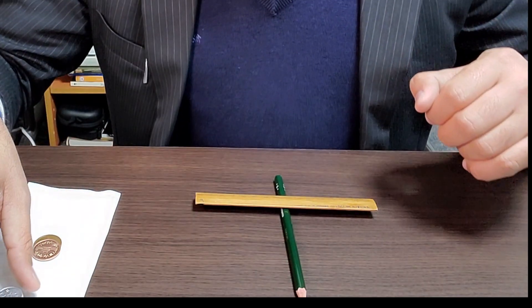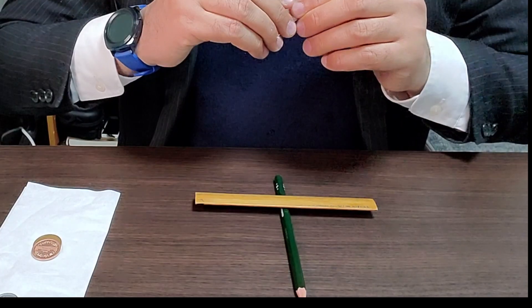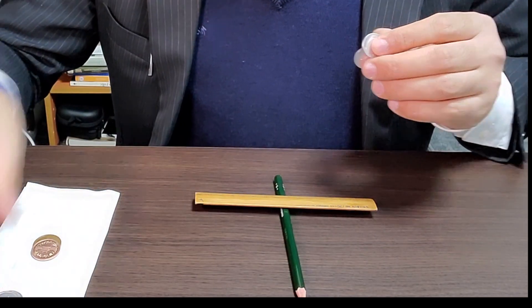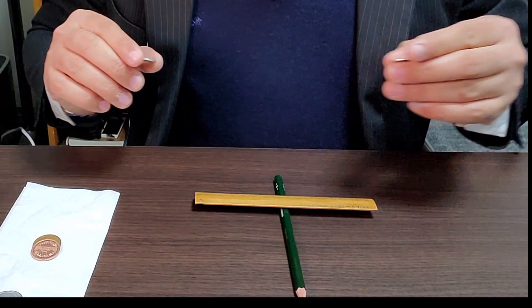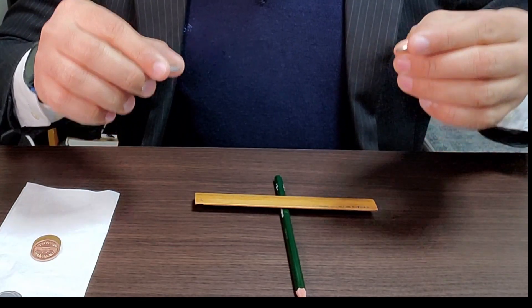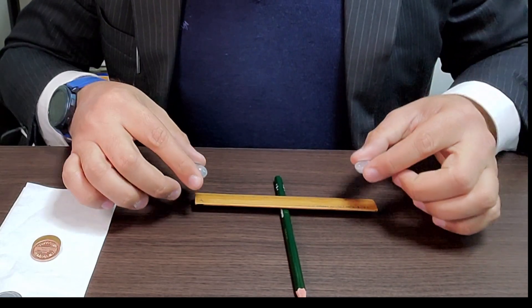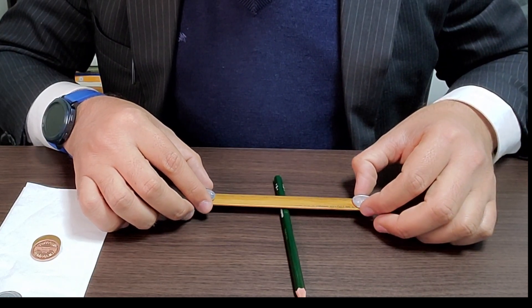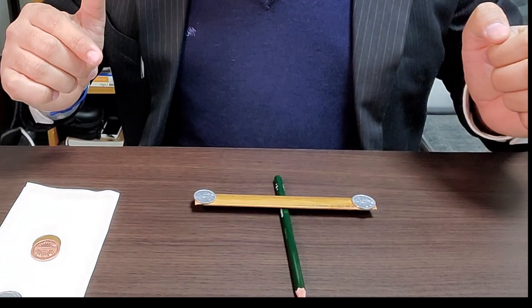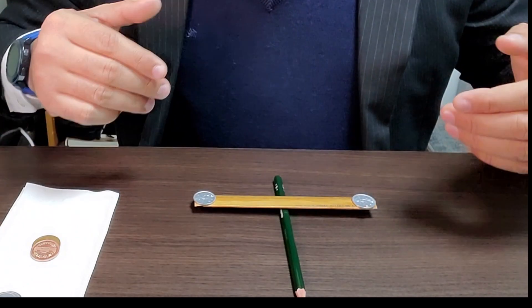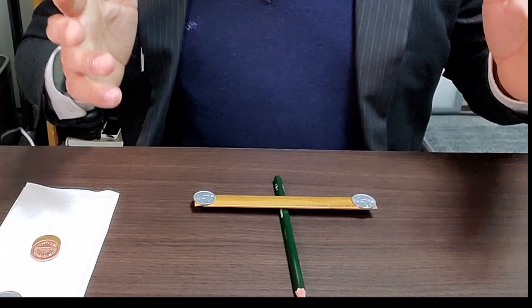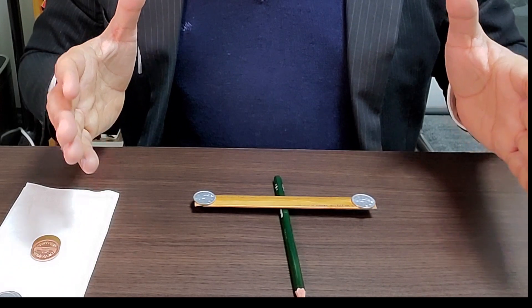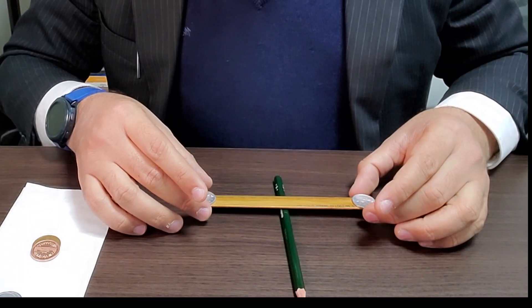First, let's check if the seesaw is well balanced. So one easy way to do so is to put a 1 yen coin on both ends of the seesaw, like so. As you can see, the seesaw is still balanced. So we have a well balanced seesaw. Now let's do the challenge.